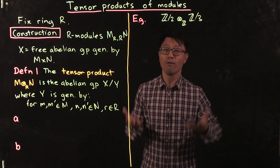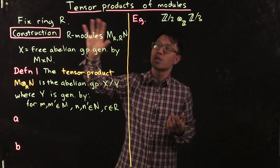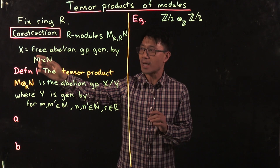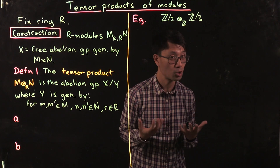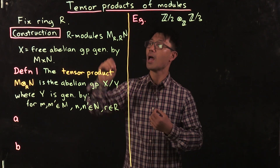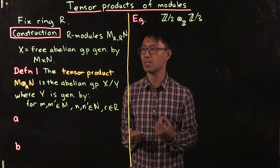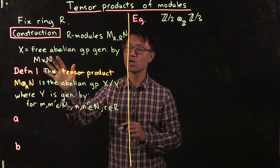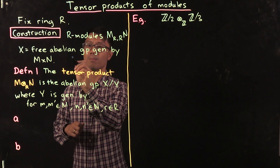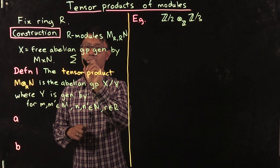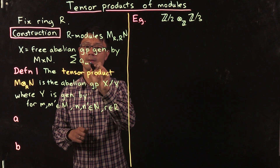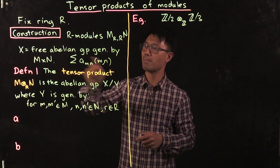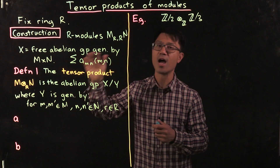We're going to mimic the construction that we saw for tensor products of vector spaces. The tensor product will turn out to be an abelian group. We're going to start off with the Cartesian product of M with N, and we look at the free abelian group generated by it. The types of things inside there are basically just Z-linear combinations of elements — finite sums of the form: integers aₘₙ as coefficients of pairs (m, n), where m is inside M and n is inside N.